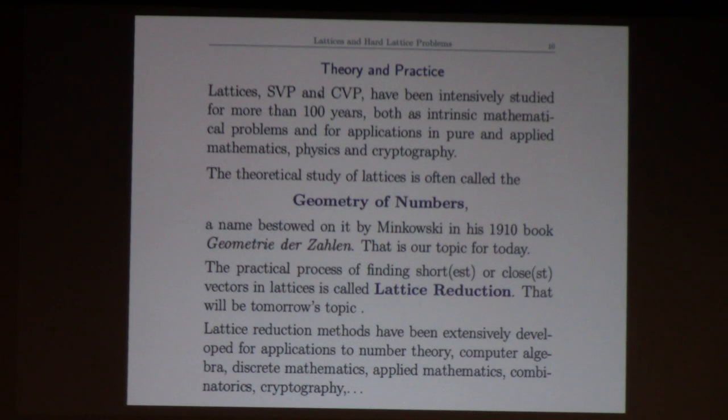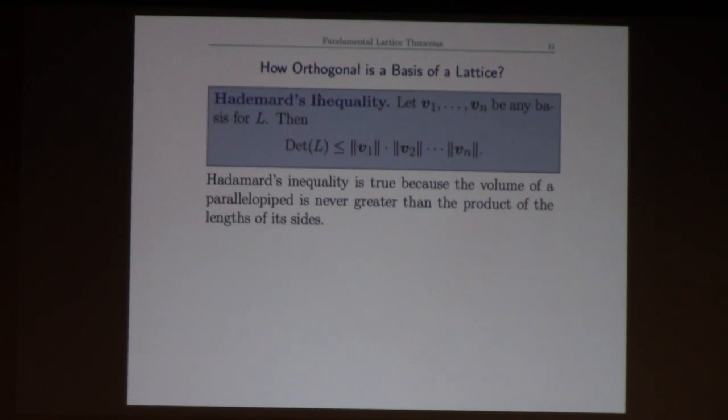So what distinguishes a good basis from a bad basis? Good bases, the vectors are kind of perpendicular. Bad bases, they make small angles. But let's quantify that a bit. First we have this upper bound for the volume of a fundamental domain. The determinant of L is just the volume of that parallelogram, and its volume is at most the product of the lengths.